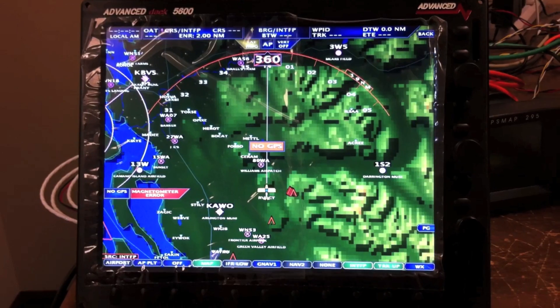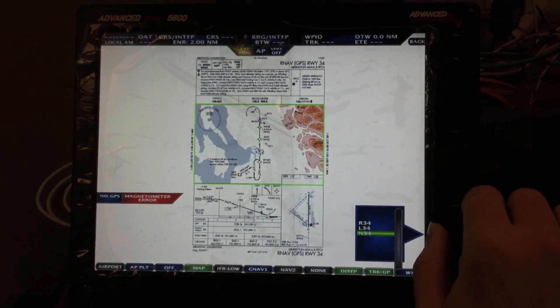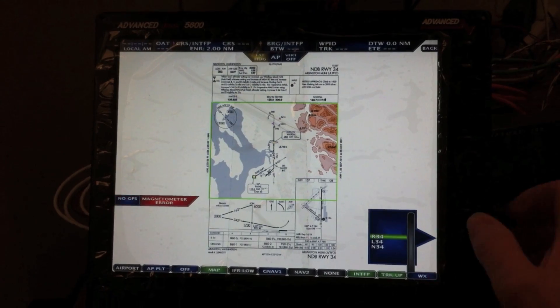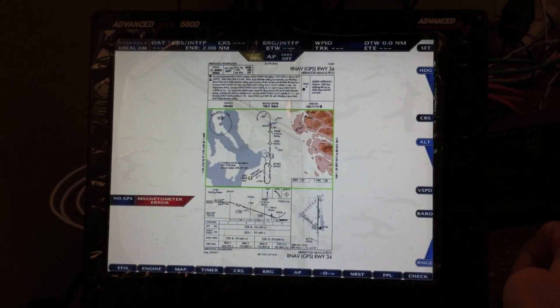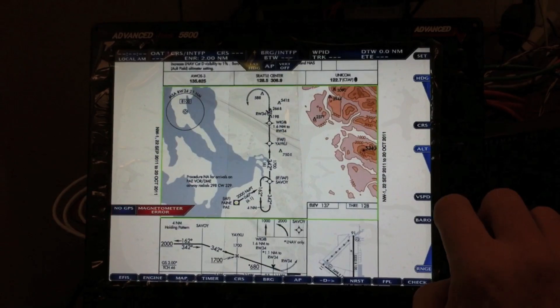Okay, let's bring up an approach plate. Map, approach plate. You can select the runways, NDB. Select the one you want. You can then zoom in.